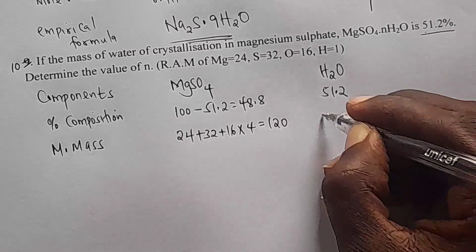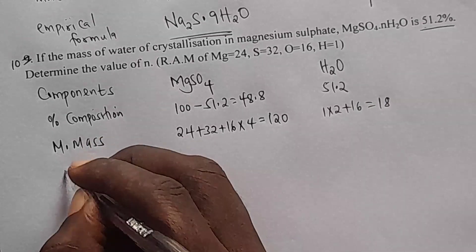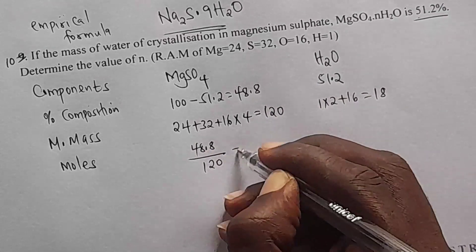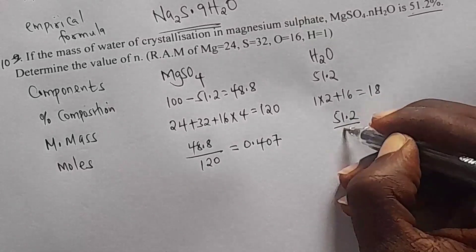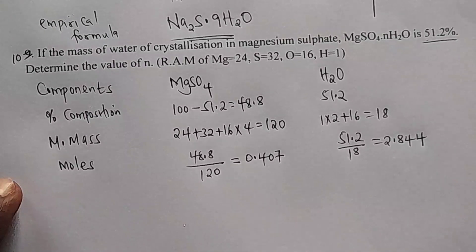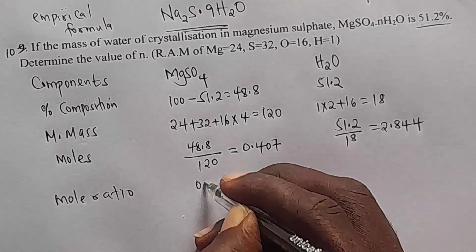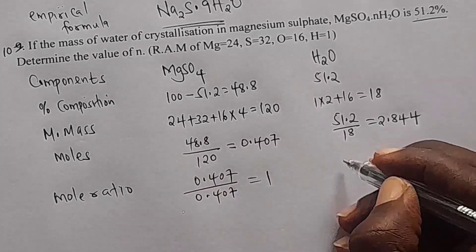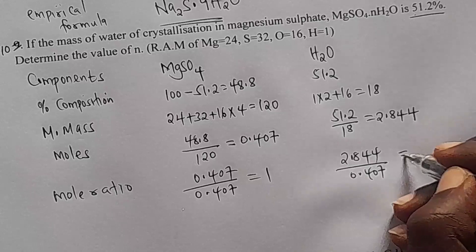For water: 1 times 2 plus 16 gives 18. Then we go for moles. The moles of magnesium sulfate: 48.8 divided by 120 gives 0.407. The moles of water: 51.2 divided by 18 gives 2.844 moles. Next we get the mole ratio. The least moles value is 0.407. So 0.407 divided by 0.407 gives 1. Then 2.844 divided by 0.407 gives 6.99.